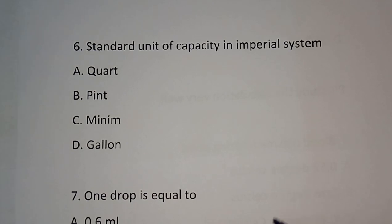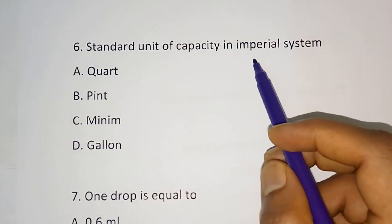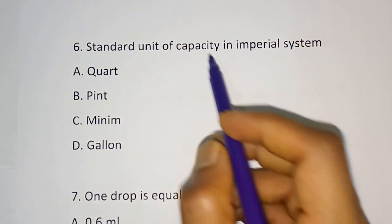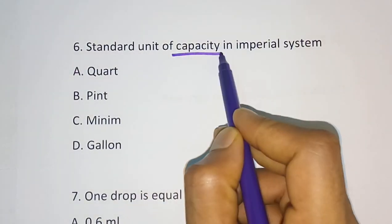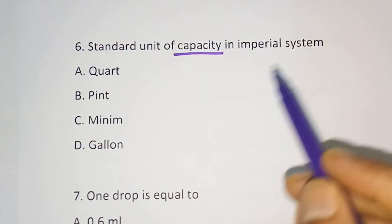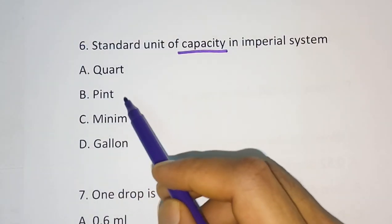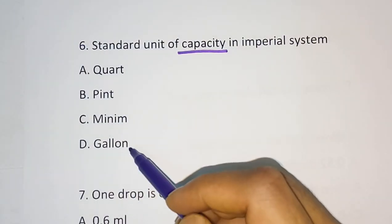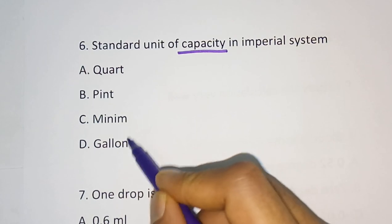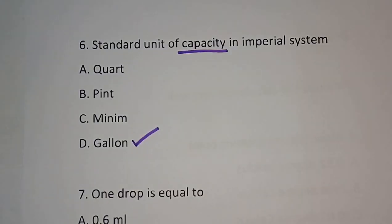Question number 6: What is the standard unit of capacity in the imperial system? Options are quart, pint, minim, and gallon. The correct answer is gallon.